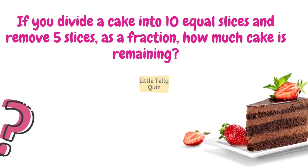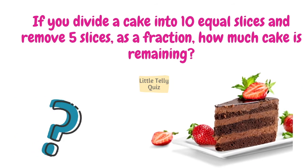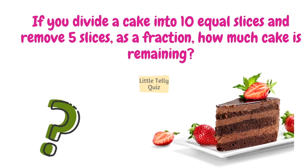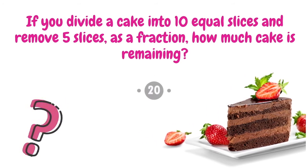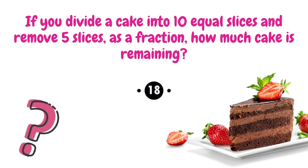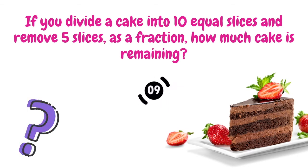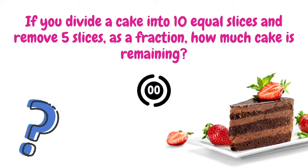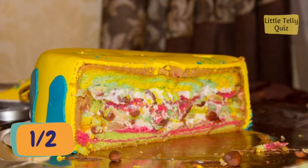If you divide a cake into 10 equal slices and remove five slices, as a fraction, how much cake is remaining? The answer is half — that means one by two.